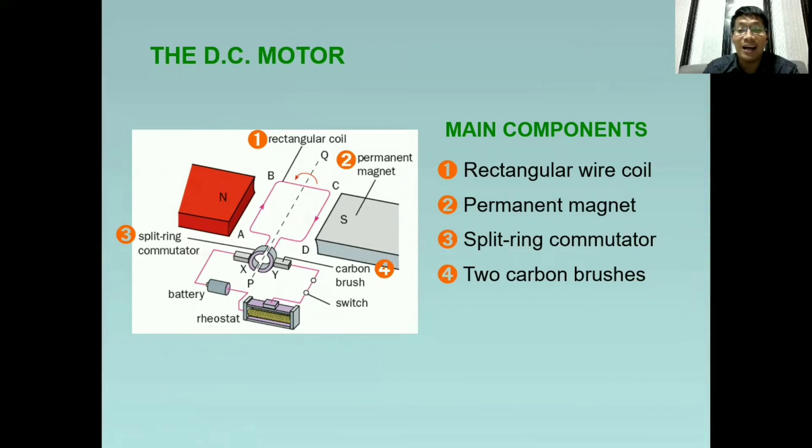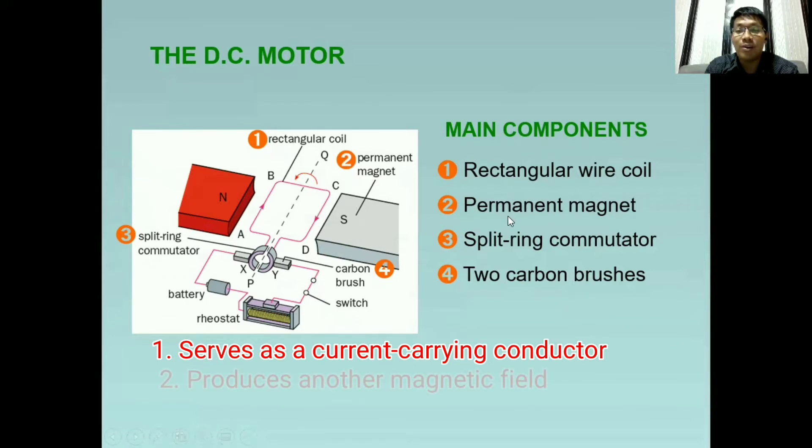Pero ano nga ba ang functions ng mga ito? Una, ang rectangular wire. Alam natin na ito ay magiging passageway ng current. At pagdumaan ang current dito or ang electricity, ito ay makakapagproduce ng magnetic field.